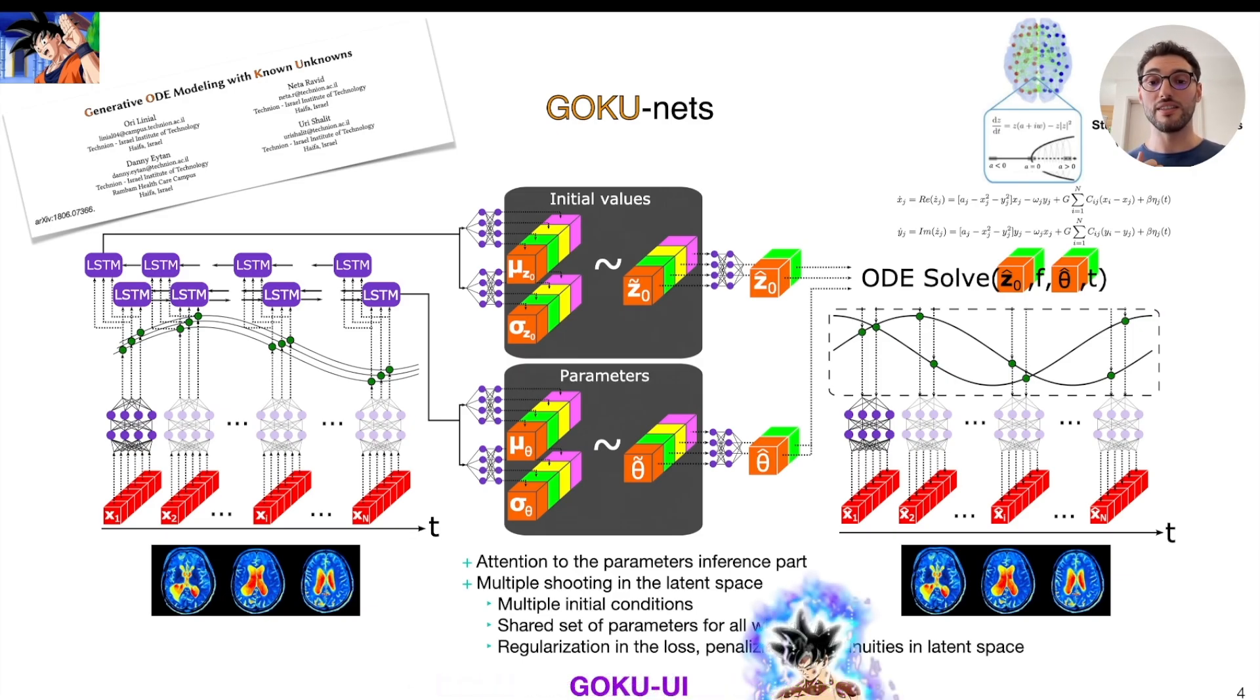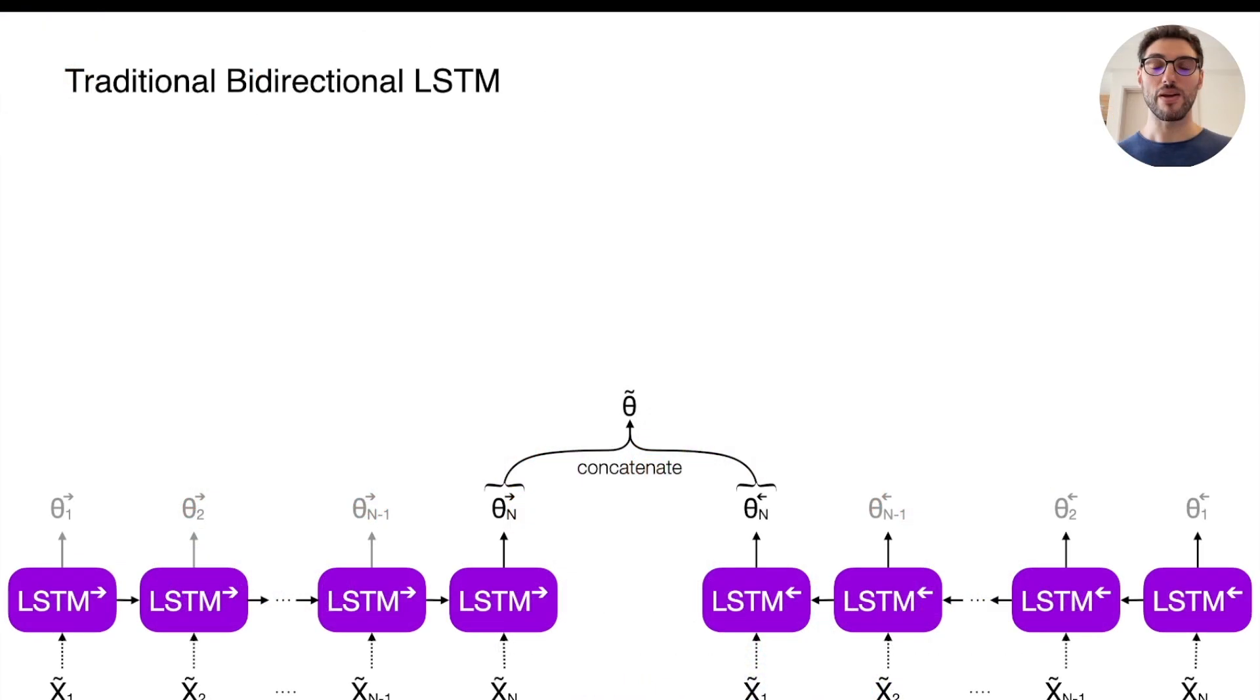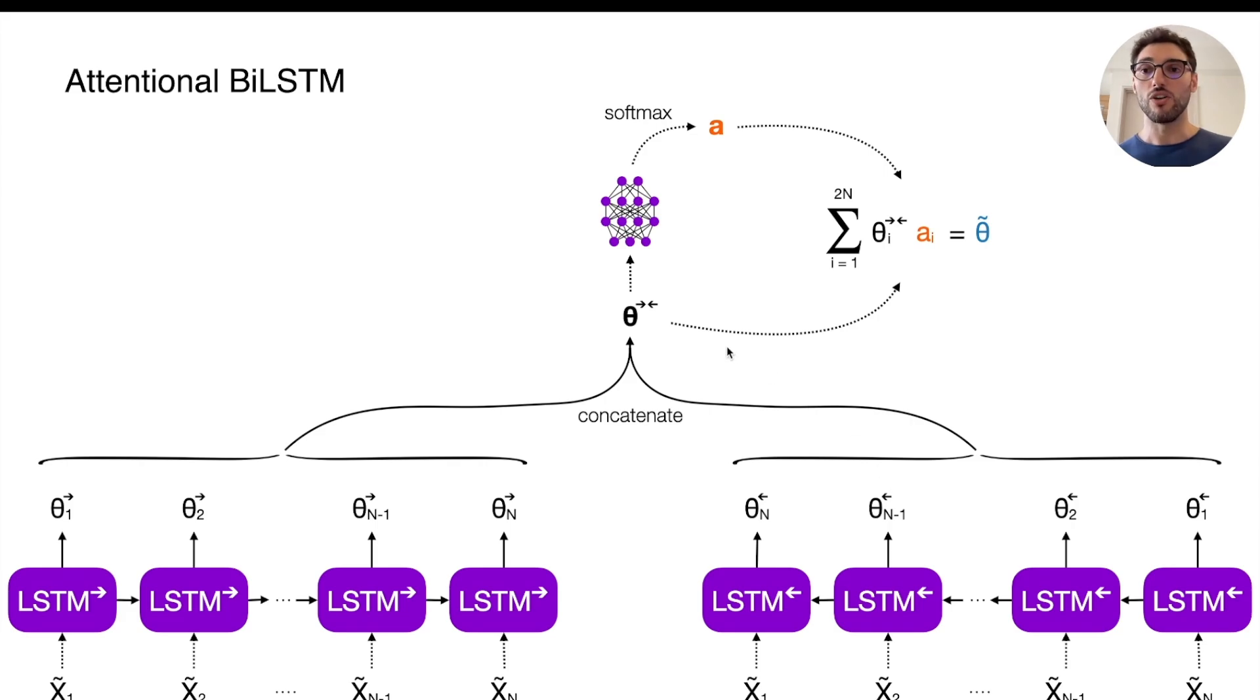Now let's see in detail the attention mechanism. But let's first recall how a traditional bidirectional LSTM works. So you have one LSTM processing your time series forward in time, another LSTM processing them backwards, and the final output is the concatenation of the last output from each LSTM. On the other hand, in the attentional bidirectional LSTM, we keep all the outputs from both LSTMs, and do a linear combination of them weighted by some attentional scores.